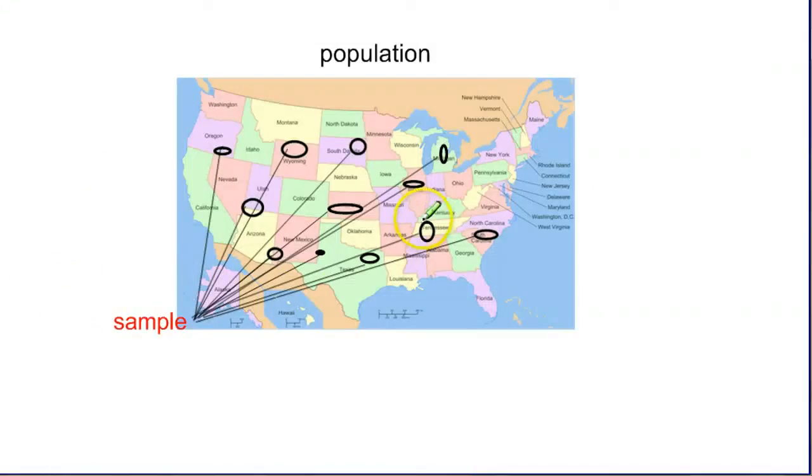Looking at this map of the United States, if our population was the United States, we would want to make sure that we had representation from all over. And sometimes we might control for that. We might intentionally make sure that we get a few people from every single state.